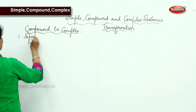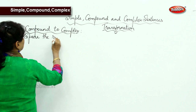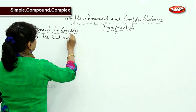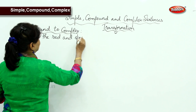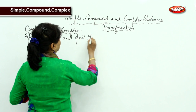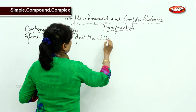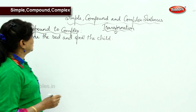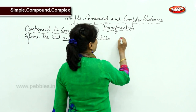First sentence for compound to complex: 'Spare the rod and spoil the child.' Here 'and' is a coordinating conjunction, so this is a compound sentence.